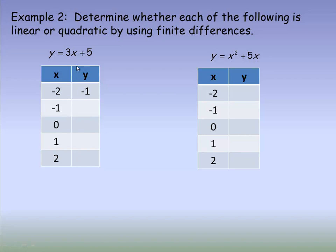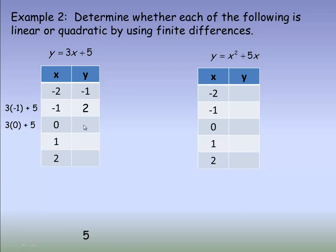To get the next y value, we substitute negative 1 in place of x. You need the x values to go in a specific order, ideally in increments of 1: negative 2, negative 1, 0, 1, 2, etc. If they're all mixed up, you can't tell from the finite differences whether they're linear or quadratic. So substituting negative 1: 3 times negative 1 plus 5 is negative 3 plus 5, which is 2. For x equals 0: 0 plus 5 is 5. For x equals 1: 3 plus 5 is 8. For x equals 2: 6 plus 5 is 11.